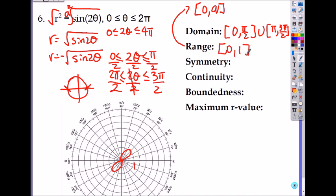Symmetry, it will be symmetrical across the pole, which is same as the origin. And continuity, yes, bounded. Yes, it is bounded. And maximum r-value will be 1.